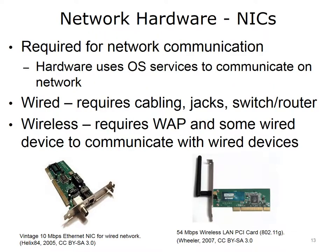For a device to communicate on a network, it must have a NIC, or network interface card. The hardware uses operating system services to communicate on the network. A service is a program that is part of the operating system and is always running. A wired NIC requires cabling and jacks, and ultimately a switch and a router for network access and communication. A wireless NIC requires a WAP, and some wired device through which the WAP will communicate with other wired devices. The images on the screen illustrate a couple of NICs.